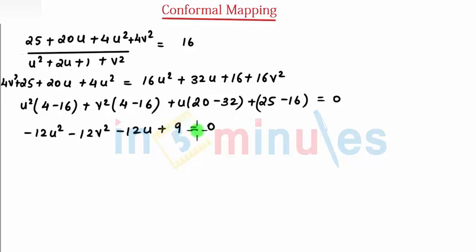You can take minus common as well as taking a constant common, you can take minus 12 common. You can write u square plus v square plus u and here you can write as minus 3 by 4 equals 0.